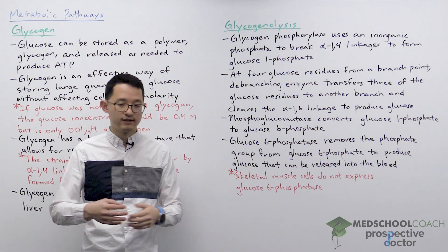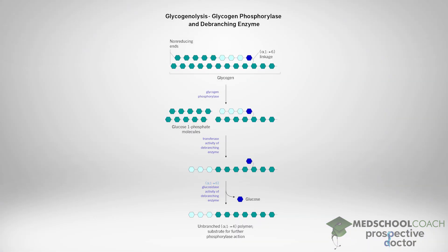In this diagram you can see how the debranching enzyme works. Glycogen phosphorylase will remove glucose monomers from straight chains breaking alpha-1,4 linkages. When you have four residues at a branch left, the debranching enzyme will come in. It will transfer three of those glucose residues onto a nearby branch and then cleave the alpha-1,6 linkage to produce a free glucose molecule.